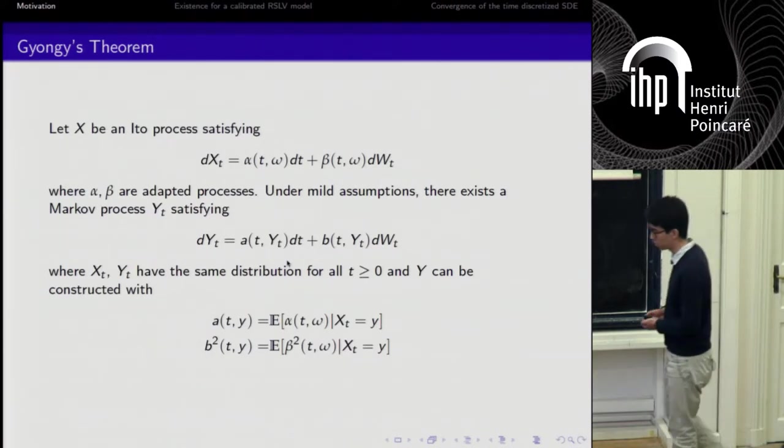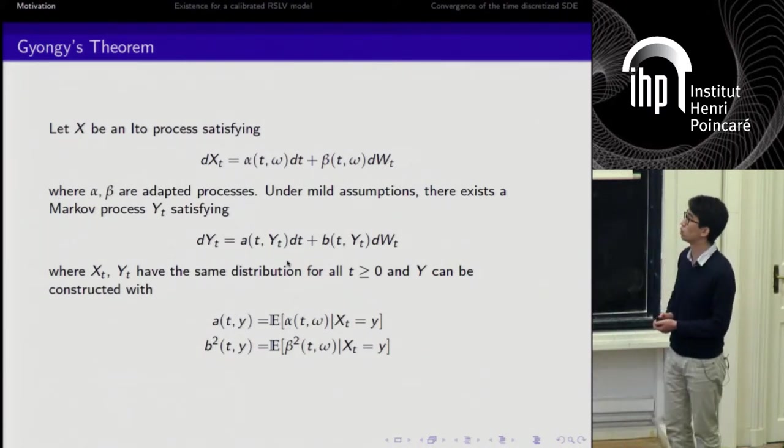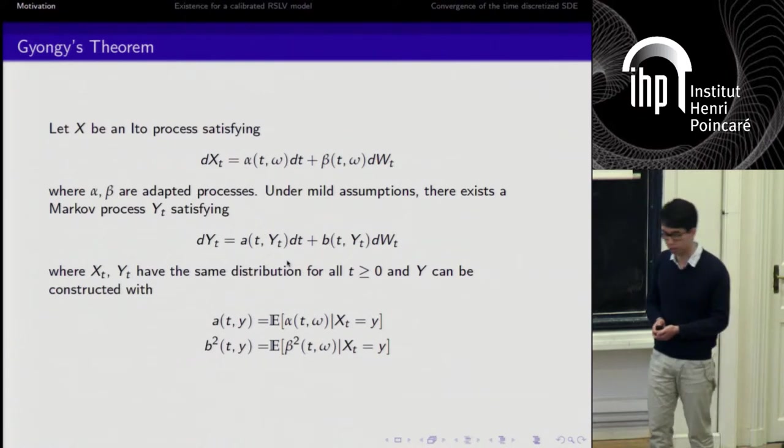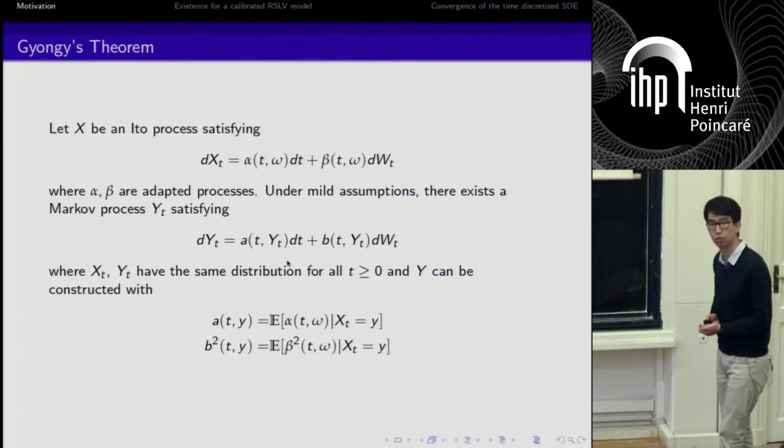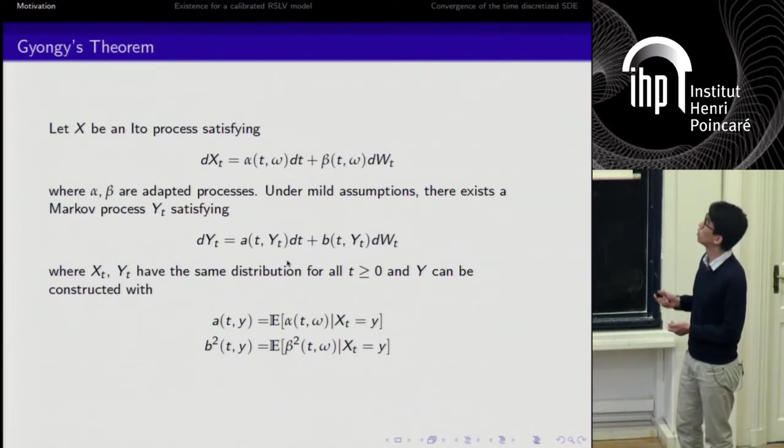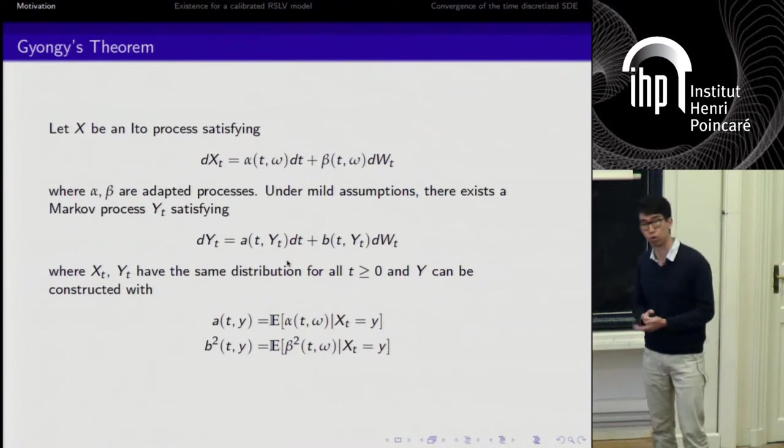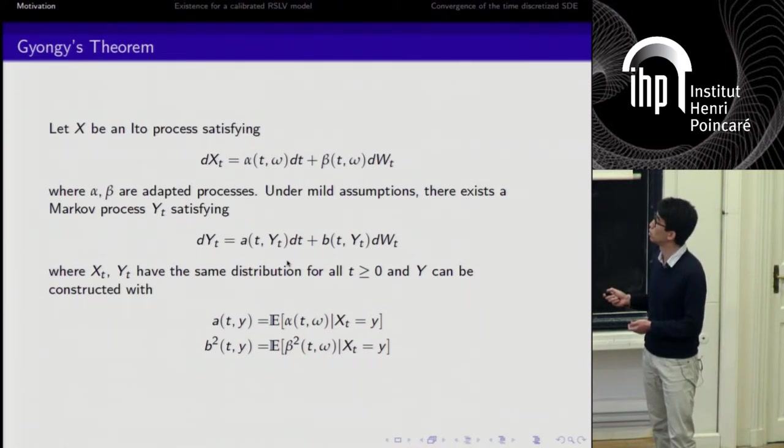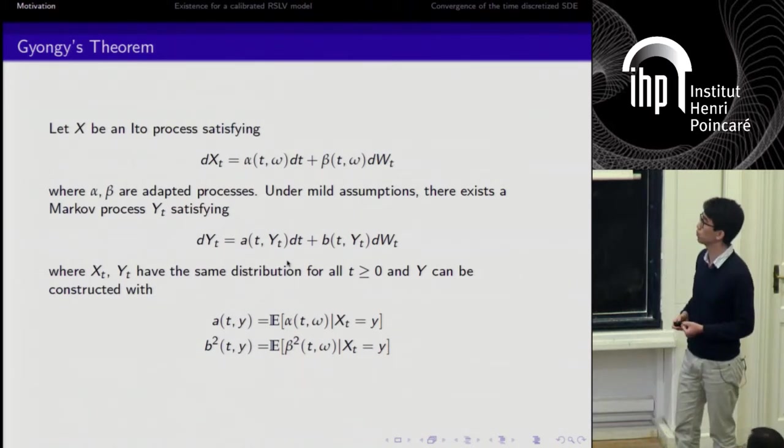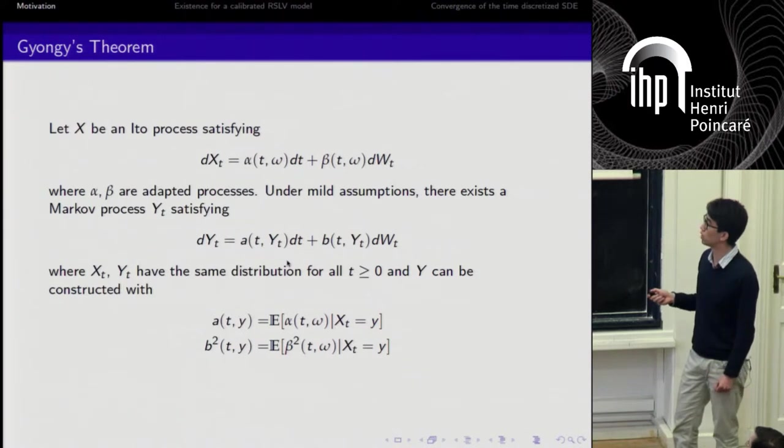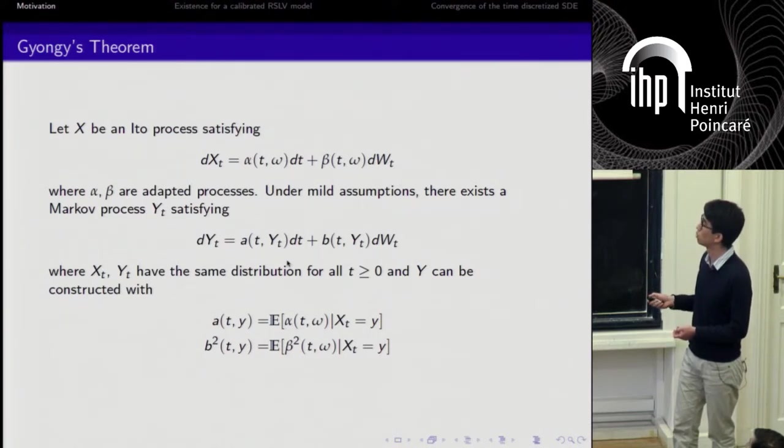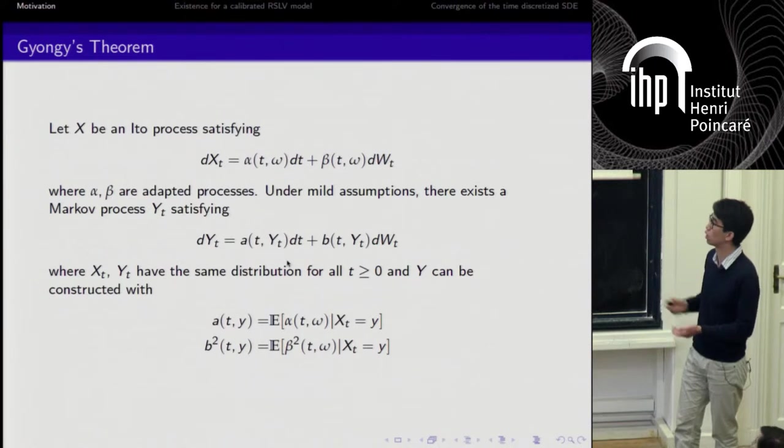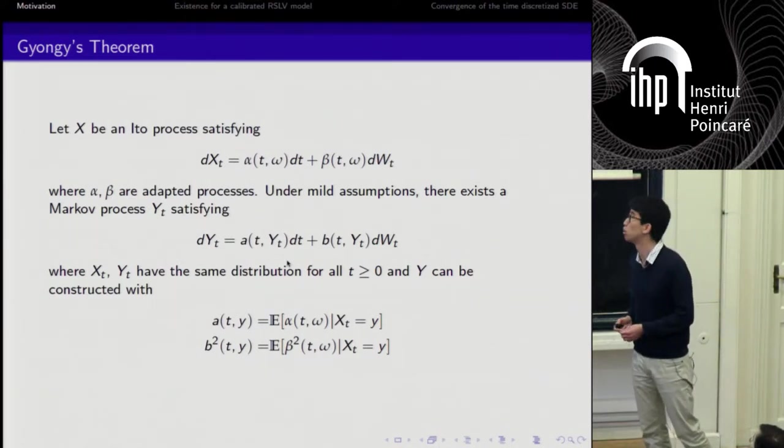The starting point of the calibration is Gyongy's theorem, which is an important result that was published in 1988. It says that if we have X, a process that is satisfying this dynamics with alpha and beta, some stochastic adaptive processes, then under some mild assumptions, there exists another Markov process Y satisfying dY_t equals this diffusion, where A and B are deterministic functions. What is interesting is that X and Y have the same distribution for all T. Moreover, we can construct A and B as functions of alpha and beta through those equalities. So A and B squared are the conditional expectation of alpha and beta squared with respect to the position of X.